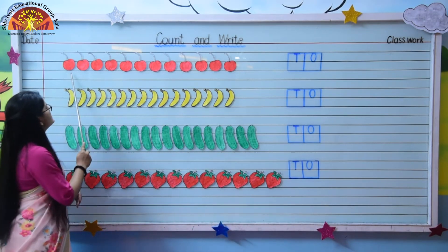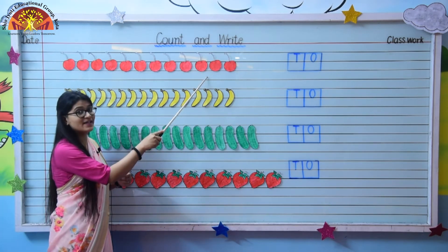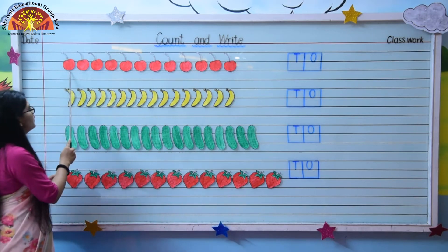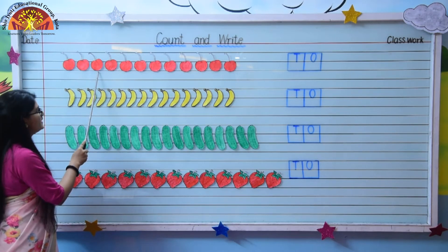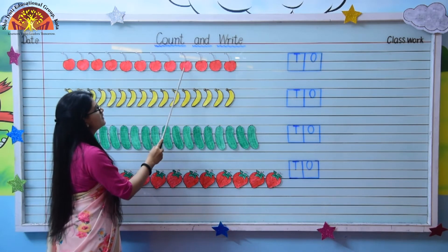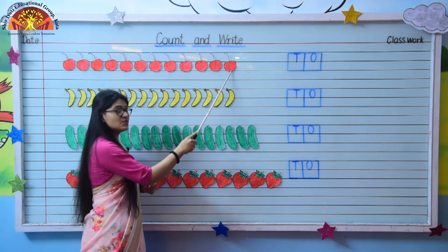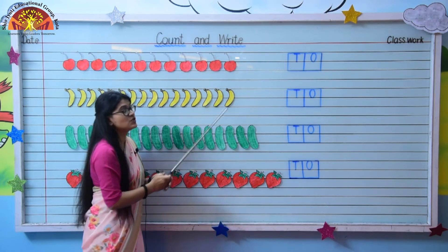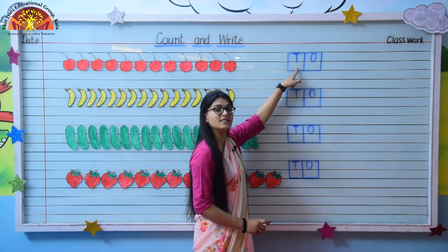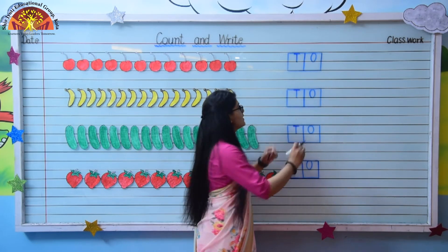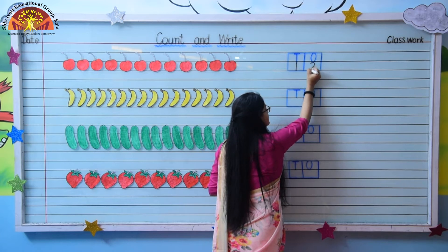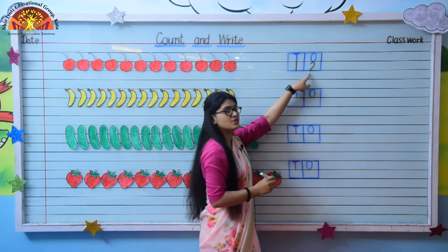So look at the board and tell me, what are these? These are cherries. So let's count — how many cherries are there? 1, 2, 3, 4, 5, 6, 7, 8, 9, 10, 11, 12. There are 12 cherries. So we will write number 12 in the box. At the place of 10s we will write 1 and at the place of 1s we will write 2. Write number 12.